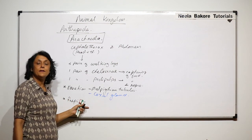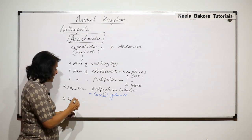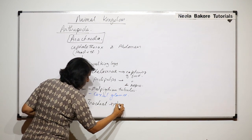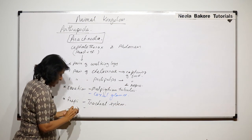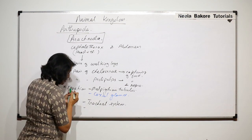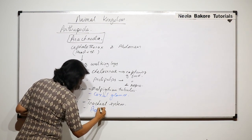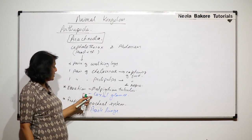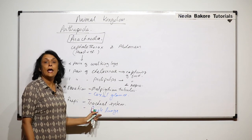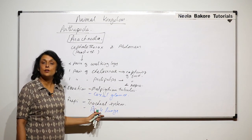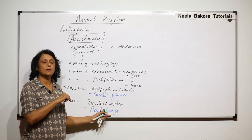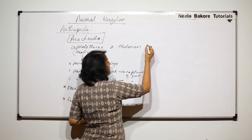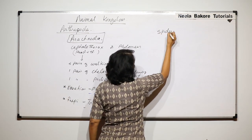For respiration, the main respiratory structure is the tracheal system. There is also a special structure known as book lungs. So for excretion there is the coxal gland, and for respiration there is the book lung — these are some special features present in members of Arachnida.